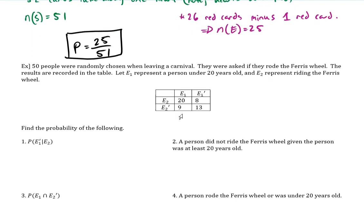So let's see one other in this video. Here we've got 50 people who were randomly chosen when leaving a carnival. They were asked if they rode the Ferris wheel, and the results are recorded in a table. Let E1 represent a person under 20 years old and E2 represent riding the Ferris wheel. So E1 is under 20; the complement — not E1 — would be 20 or older. And E2 is 'ride'; the complement would be 'not ride.'